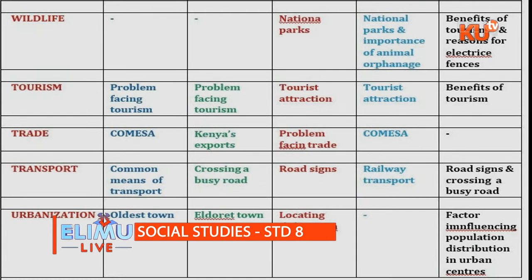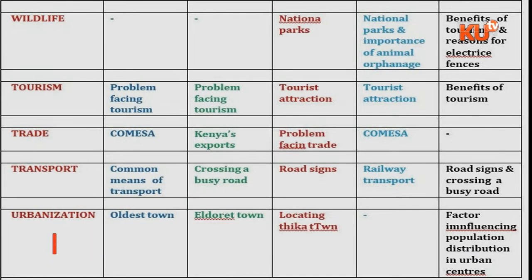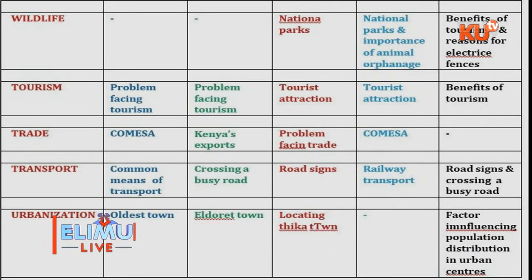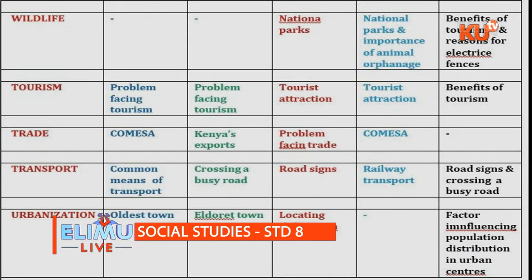On transport: 2019 covered crossing a busy road, and road signs appeared in 2020 and 2022 — meaning it is most commonly examined. On urbanization: the oldest town question came in 2018. Eldoret town and locating Thika town on the map of Kenya are also tested. In 2022, factors influencing population distribution in urban centers was asked.